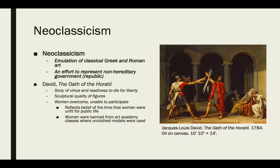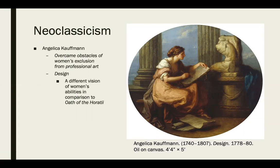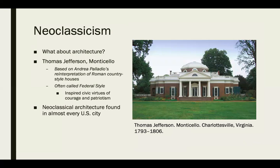Angelica Kauffman is a neoclassical artist who overcame the obstacles of women's exclusion from professional art. She did have privilege — her father was an artist and was higher up in society — but it's notable that a woman was acknowledged in this style. She references Greek and Roman themes like neoclassicism, but has a different vision of women's capabilities compared to the Oath of the Horatii, showing women doing more academic things like sketching sculpture.